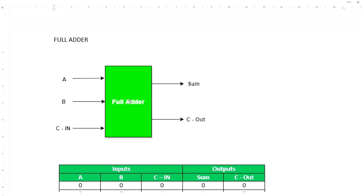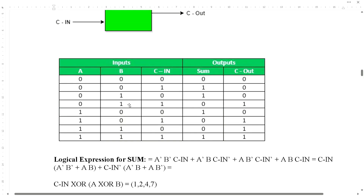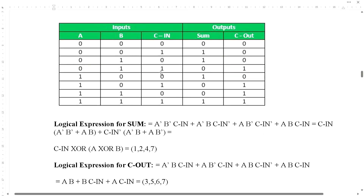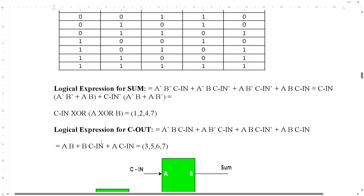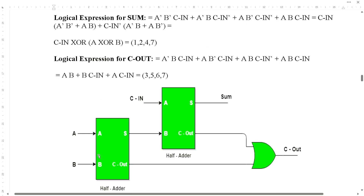We are making a full adder through L-Edit. As we know, the full adder is a three-input device which produces two outputs. This is the truth table of the full adder — it has three inputs A, B, C_in and produces two outputs: Sum and C_out. These are the combinations we can get. By using K-map we can solve this and get a logical expression for the Sum, which is C_in XOR A XOR B, and the logical expression for C_out is equal to A·B + B·C_in + A·C_in.